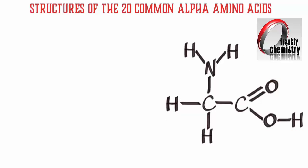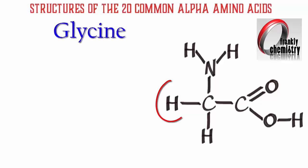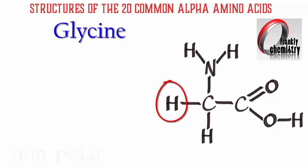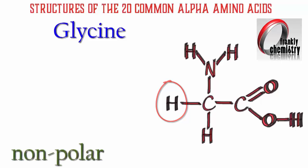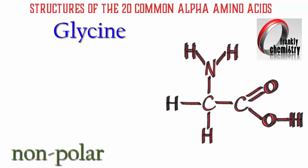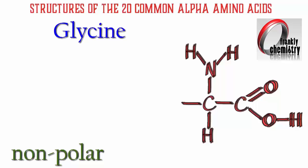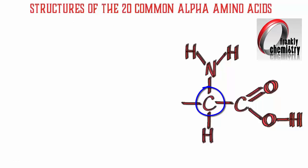The 20 different amino acids have a different so-called R group. In the case of glycine, our simplest amino acid, the R group is a hydrogen atom, and it's a nonpolar amino acid. It's the only amino acid that's not optically active, as the alpha carbon has two Hs attached.